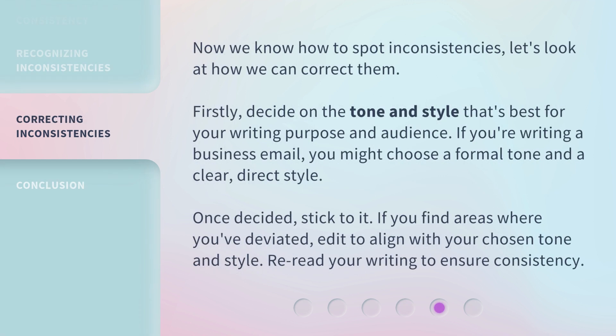Now we know how to spot inconsistencies. Let's look at how we can correct them. Firstly, decide on the tone and style that's best for your writing purpose and audience. If you're writing a business email, you might choose a formal tone and a clear, direct style. Once decided, stick to it. If you find areas where you've deviated, edit to align with your chosen tone and style. Reread your writing to ensure consistency.